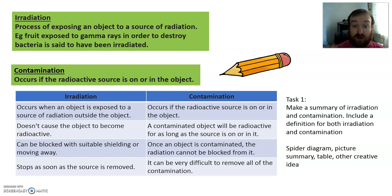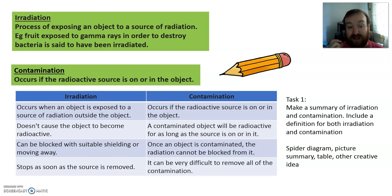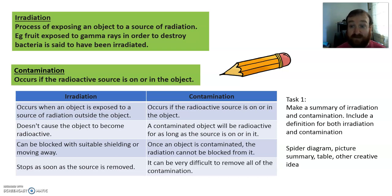Contamination occurs if the source is on or in the actual object. A contaminated object will be radioactive for as long as the source is on it. So if I became contaminated with a radioactive source, it would be giving out radiation — alpha, beta or gamma. Once an object is contaminated, the radiation cannot be blocked from it because it's in contact. It can be really difficult to remove all contamination — sometimes the sources can be microscopic and you can't see them.